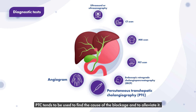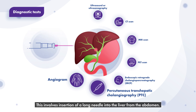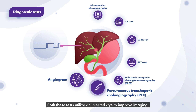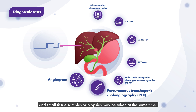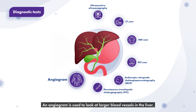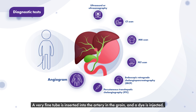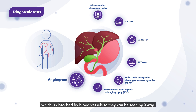PTC tends to be used to find the cause of the blockage and to alleviate it. This involves insertion of a long needle into the liver from the abdomen. Both these tests utilise an injected dye to improve imaging and small tissue samples or biopsies may be taken at the same time. An angiogram is used to look at larger blood vessels in the liver. A very fine tube is inserted into the artery in the groin and a dye is injected, which is absorbed by blood vessels so they can be seen by X-ray.